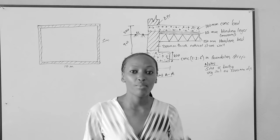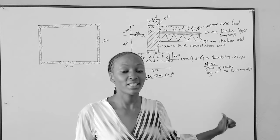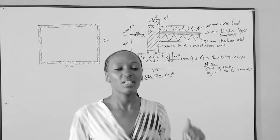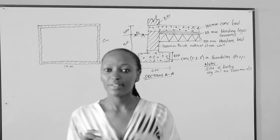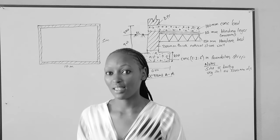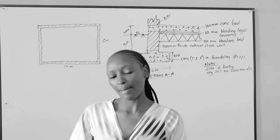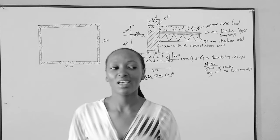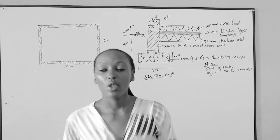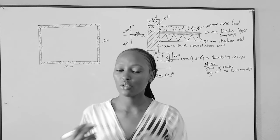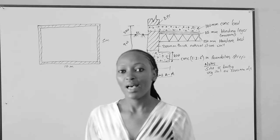For example, we shall measure formwork in linear meters for the edges. We shall measure site clearance in terms of area. We shall measure concrete in terms of volume. When we come to the bill of quantities, after entering these measurements, we shall enter them in the column for measurements, then we shall come up with a rate.